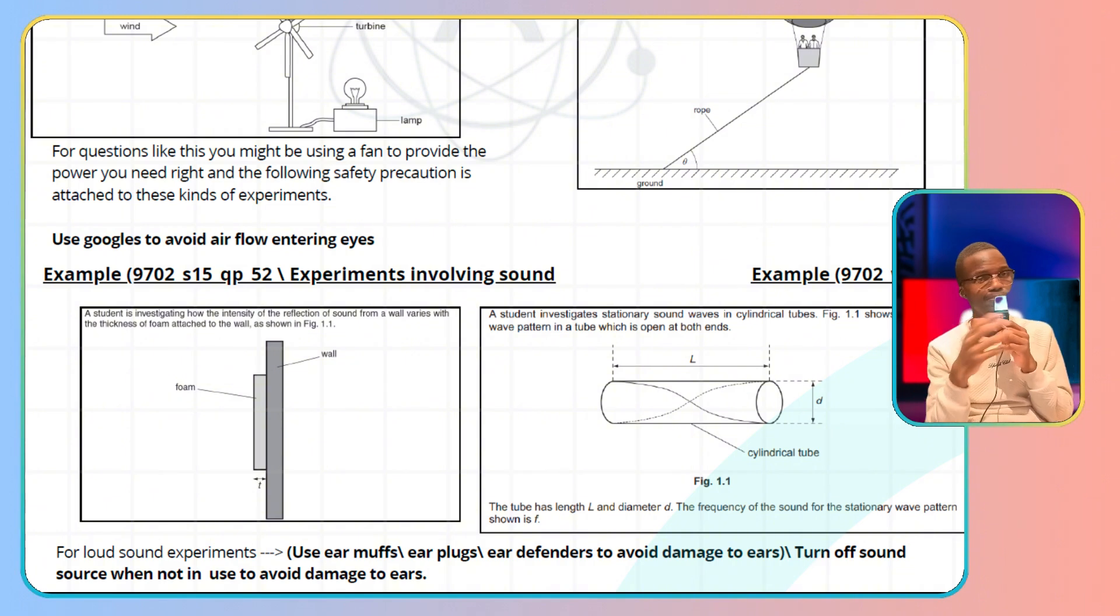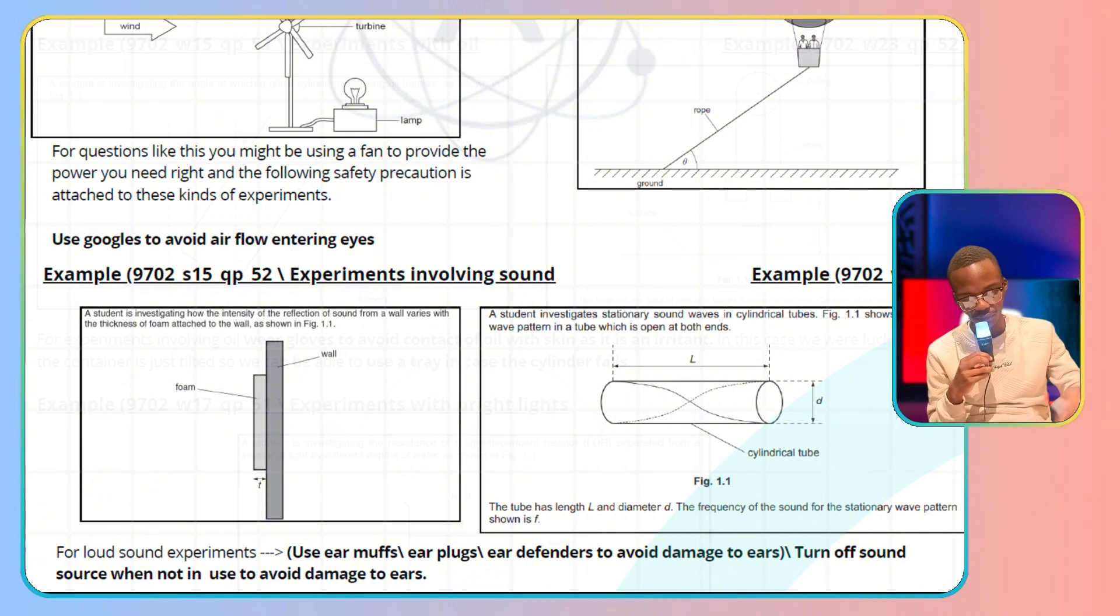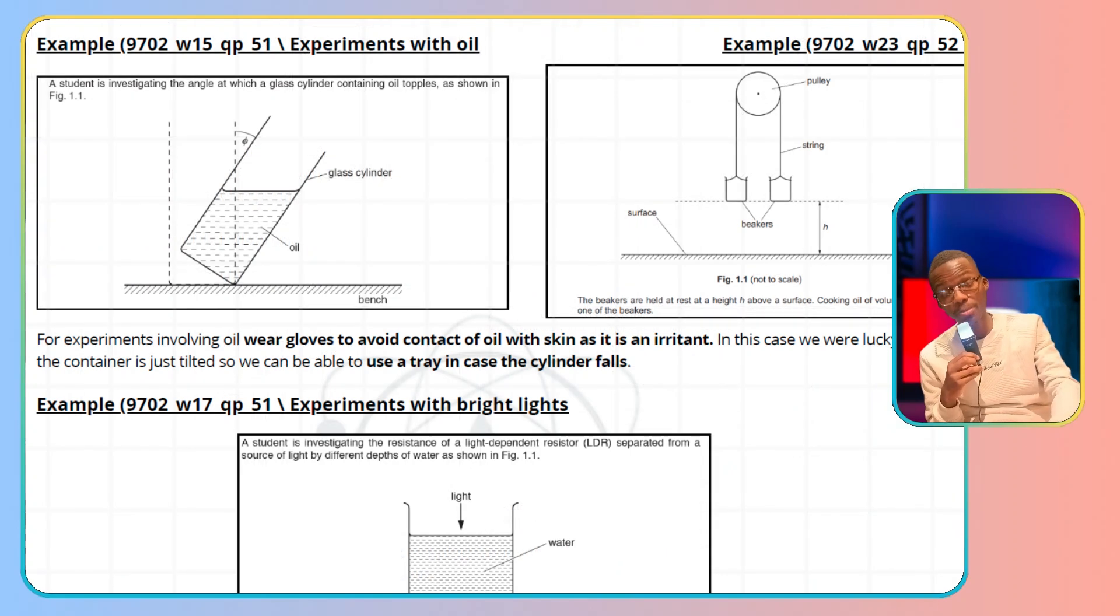Another golden nugget: perform the experiment in a quiet room. For sound experiments, that's not really a safety precaution, but it's something to think about. We'll talk about where to include it later. Let's move on.